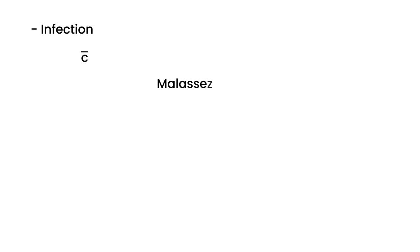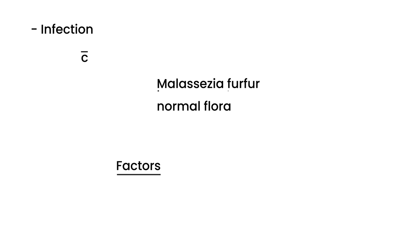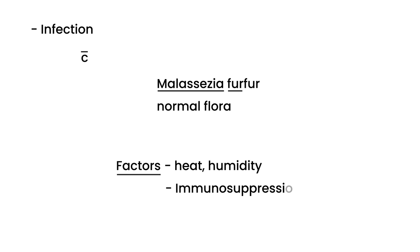Tinea versicolor is an infection caused by a fungus known as Malassezia furfur, and Malassezia furfur is part of our normal flora. Now if it's part of our normal flora, then why does it cause a rash? There are certain factors that can contribute to this fungus developing into an uncomfortable-looking rash, because it's asymptomatic. Those factors are heat, humidity, and any form of immunosuppression, which will also contribute to this rash developing.